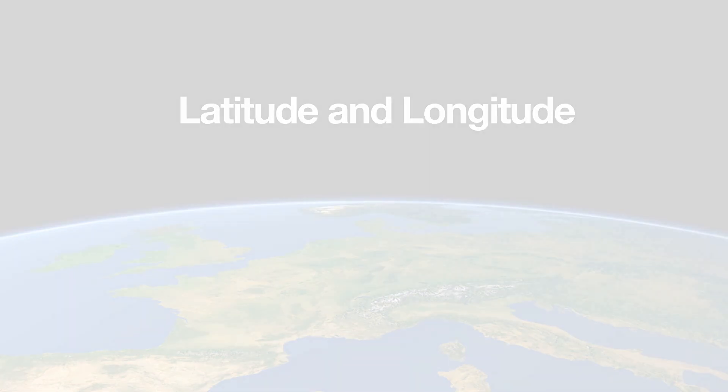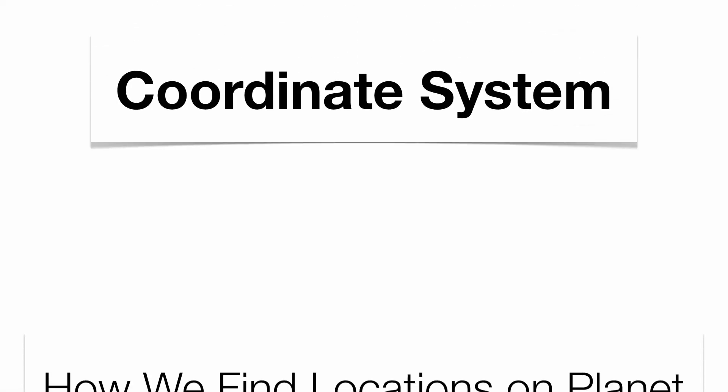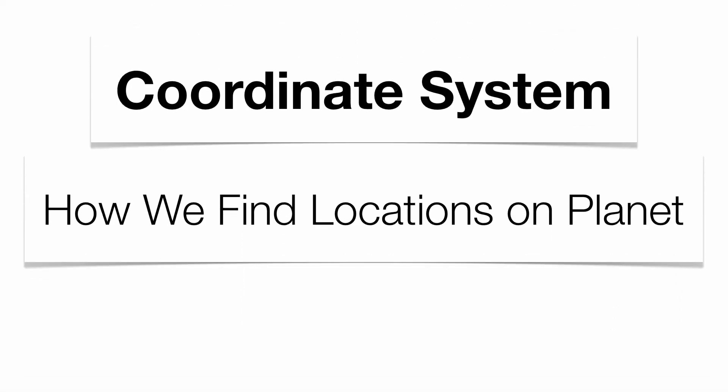Together, they make what's called a coordinate system, which allows us to find any location here on the planet, much like your GPS system does in your car. What we're going to do now is break it down individually and show you the importance of each one of them by themselves.